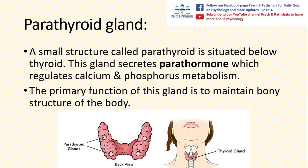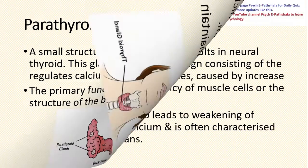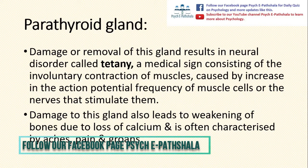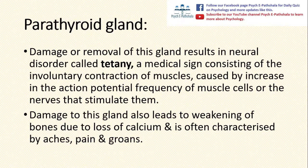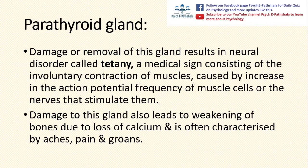The next gland is the parathyroid gland, a small structure situated below the thyroid. This gland secretes parathormone, which regulates calcium and phosphorus metabolism. The primary function of this gland is to maintain the bony structure of the body. Damage or removal of this gland results in a neural disorder called tetany — involving involuntary contraction of muscles caused by increased action potential frequency of muscle cells or the nerves that stimulate them. Damage to this gland also leads to weakening of bones due to loss of calcium, often characterized by aches, pain, and groan.